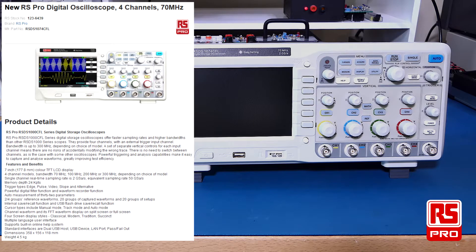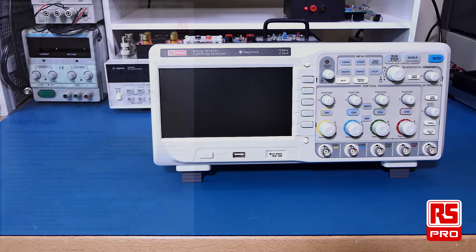The cursor types include manual mode, track mode, and auto mode. The channel waveform and its FFT waveform display on split screen or full screen. It also includes a built-in online help system.